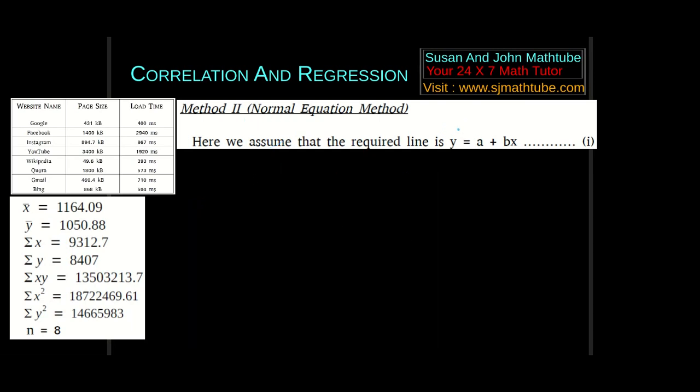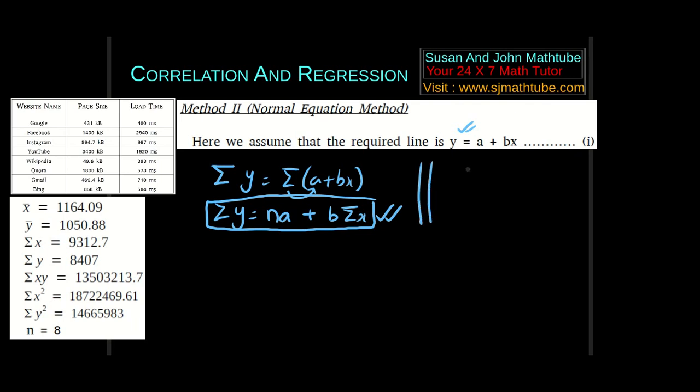That's the first equation. Once more I will tell you, here we assume the equation to be y equal to a plus bx. Then we take sigma on both sides. We get sigma y equal to sigma of a plus bx. Using the properties of sigma, we end up with sigma y equal to n into a plus b sigma x. So that is equation number two. You have to by heart this or you can derive it every time. Now the second thing, we need two equations.